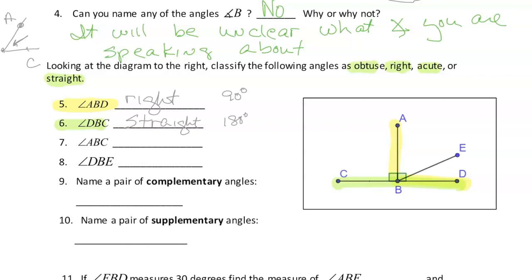Angle ABC goes this way, and it's also a right angle — 90 degrees. How about DBE? DBE — I cannot get an exact measure for it, but I can see that it's less than 90 and more than zero, so that's going to be acute.